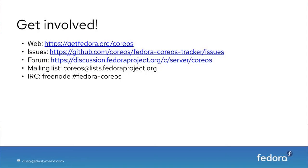To get involved: grab Fedora CoreOS or view releases at getfedora.org/coreos. For issues or design discussions, open tickets in our tracker at github.com/coreos/fedora-coreos-tracker. We have a forum for user questions like 'how do I set a password,' a mailing list, and a Fedora CoreOS IRC channel on Freenode. Let me switch to share the issue tracker directly.